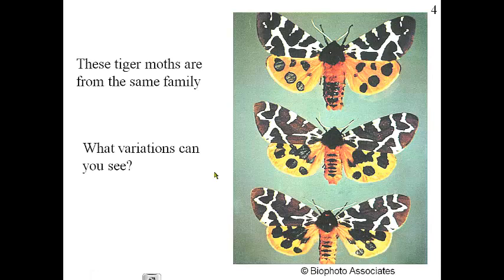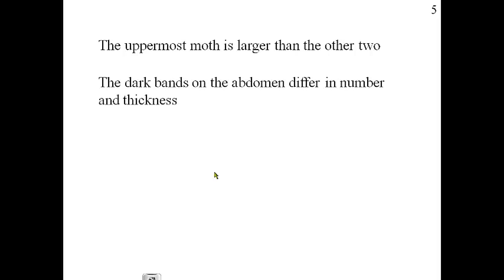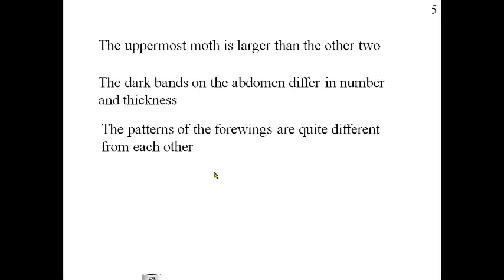These tiger moths are all in the same family. The uppermost moth is larger than the other two, so the trait is size and the variation is that some are bigger and some are smaller. Some have dark bands on their abdomen that differ in number and thickness — the trait is abdominal bands and the variation is that some are thicker or thinner. They also have different patterns on their wings, so the trait is wing pattern and the variation is that each butterfly has a different pattern.